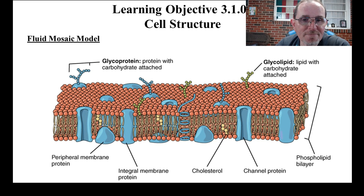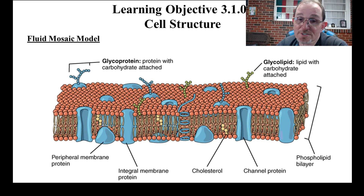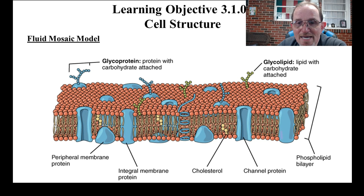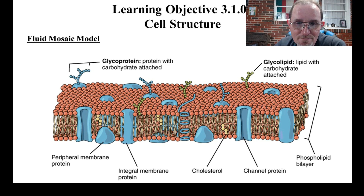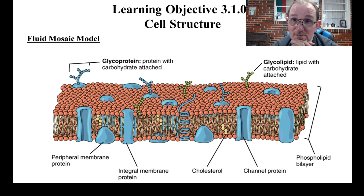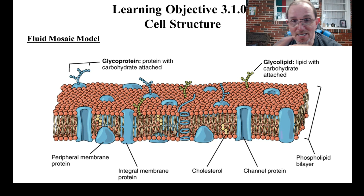This is a glycoprotein — that's the protein with a chain of sugars attached. We also have glycolipids, where the phosphate head has a carbohydrate chain attached to it. In other words, we can have sugars attached to proteins and sugars attached to the heads of the phospholipids. Those four rings right there are cholesterol. We have about 20% of the plasma membrane as cholesterol — it stabilizes it and makes it a lot more sturdy.